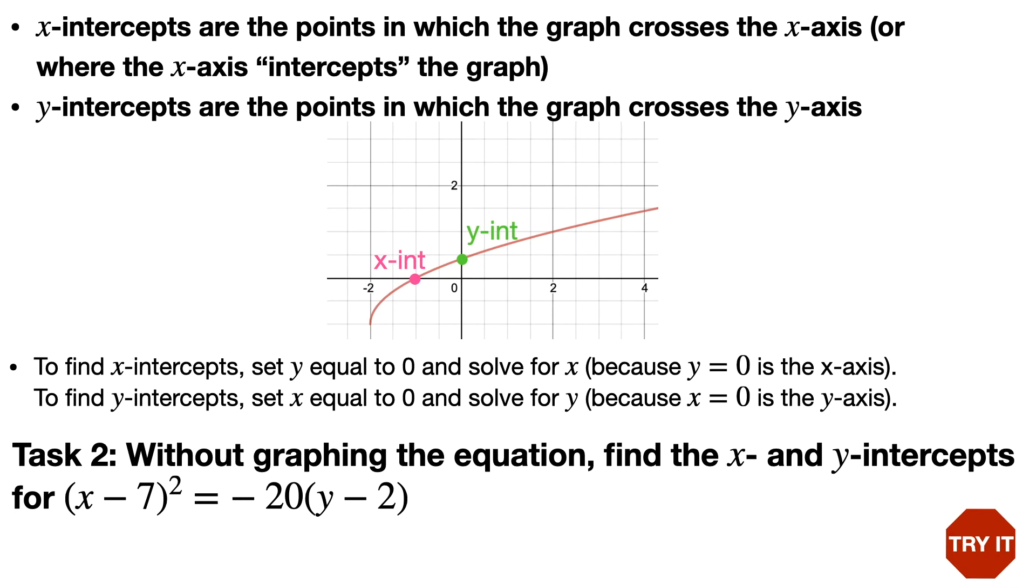So task 2 is, without graphing the equation, find the x and y-intercepts for (x - 7)² = -20(y - 2). Try it now.